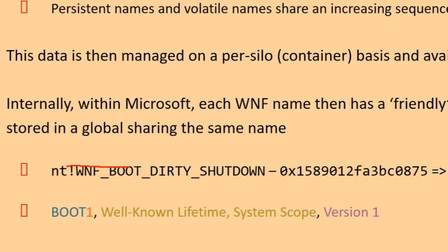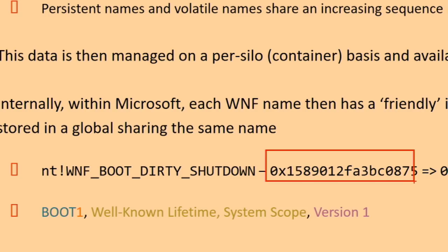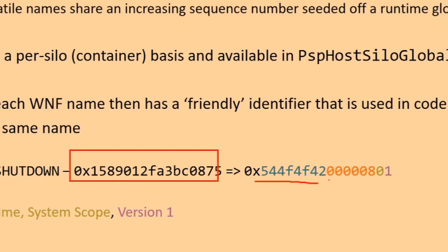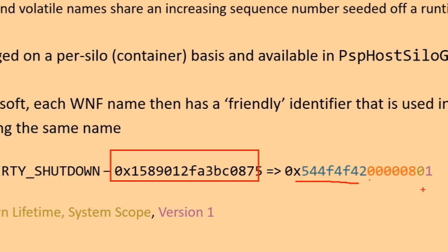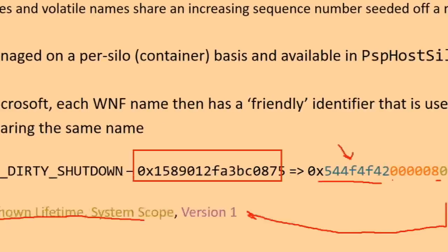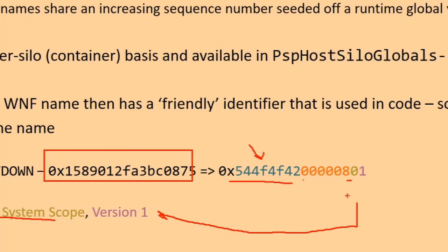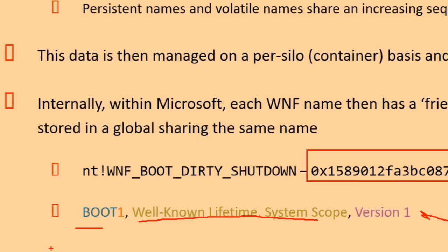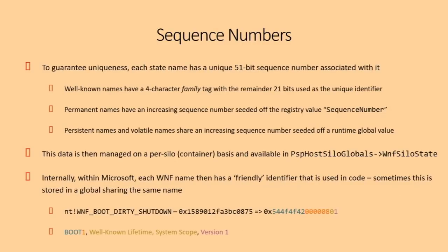Here's an example: WNF_BOOT_DIRTY_SHUTDOWN. Its raw value is 0x15890... in hex. You XOR that with the magic key and get a more readable structure. Following the data structure, this tells us it's version 1, the zero here indicates it's a well-known system-scoped name, the ASCII characters represent the word 'BOOT', and the last field indicates it's the first event in the boot family.